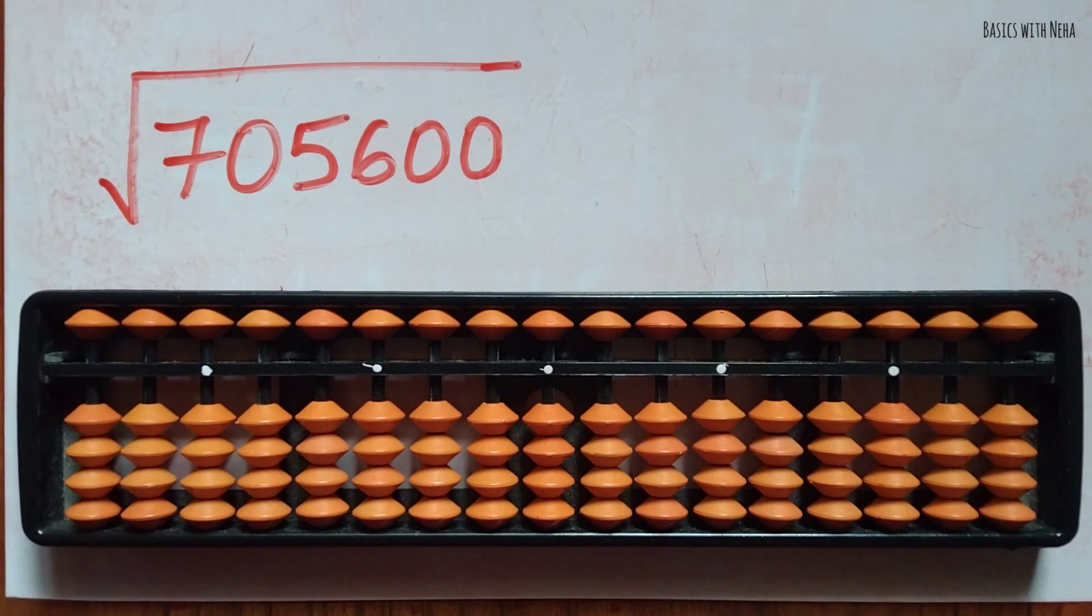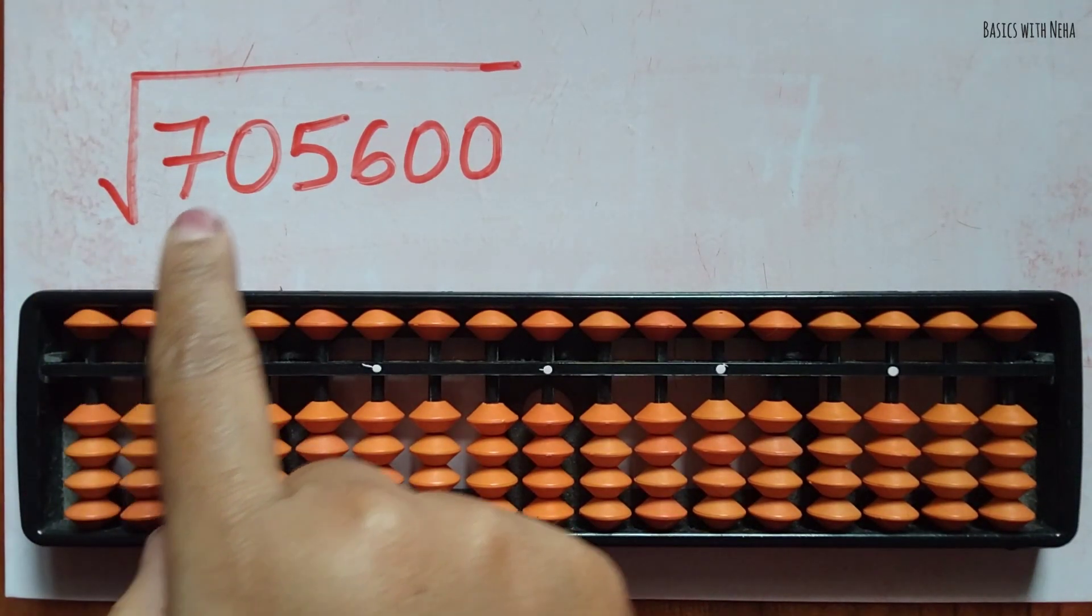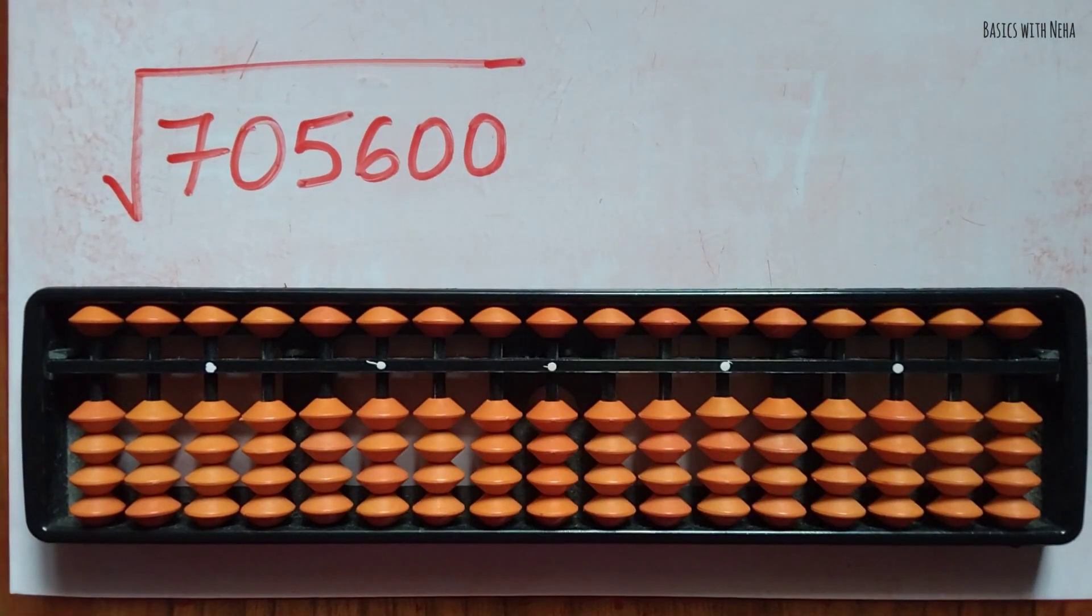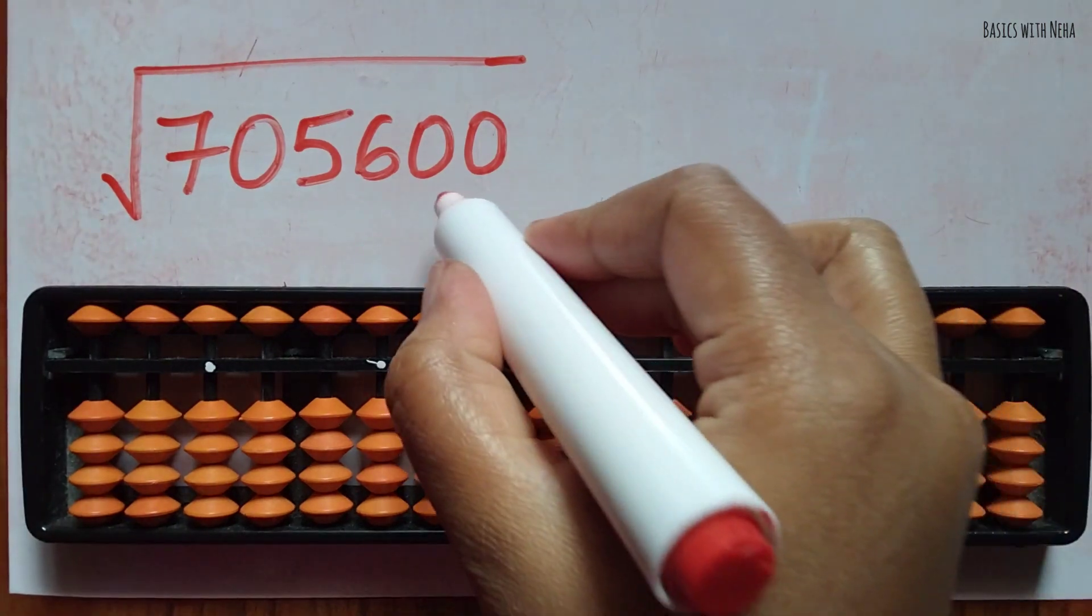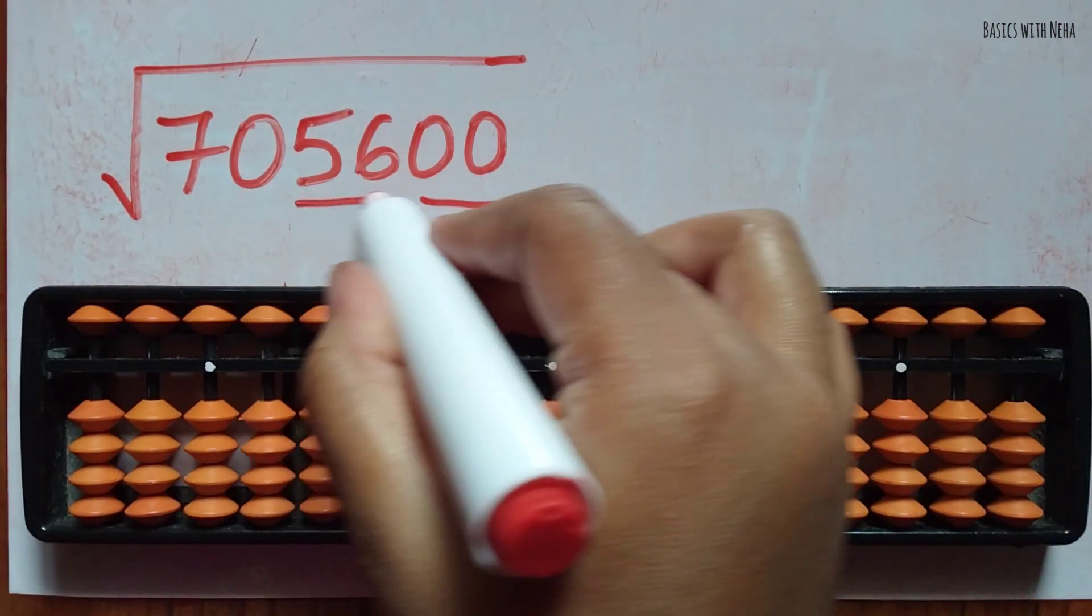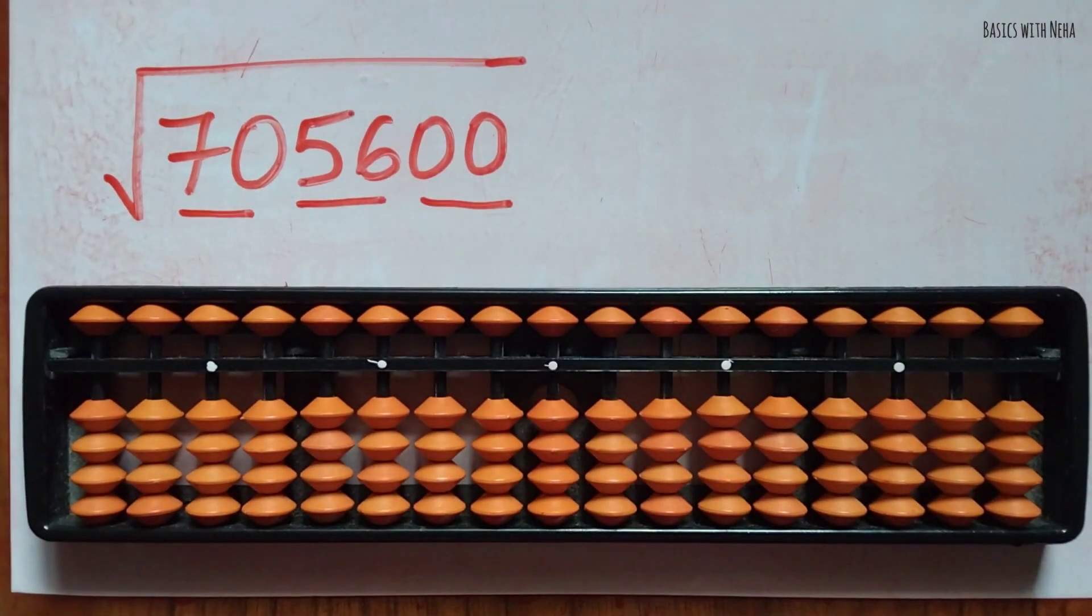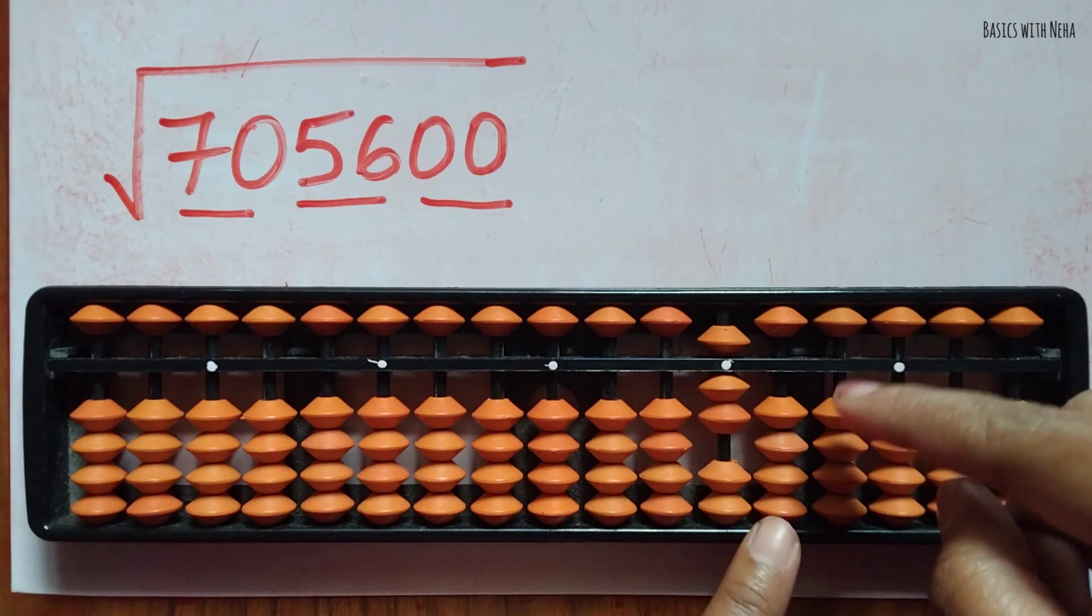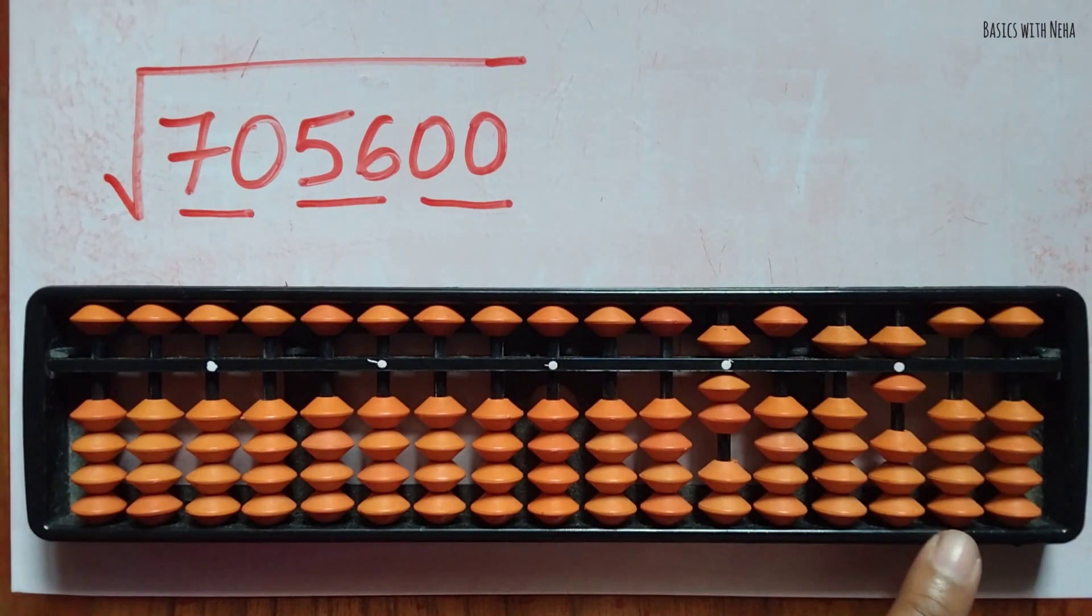Hello, welcome back to my YouTube channel. We need to find the square root of 705,600. We have to group this number into two from the right side, so we are going to group it like this. And the same thing we are going to take it in the tool, that is 705,600.